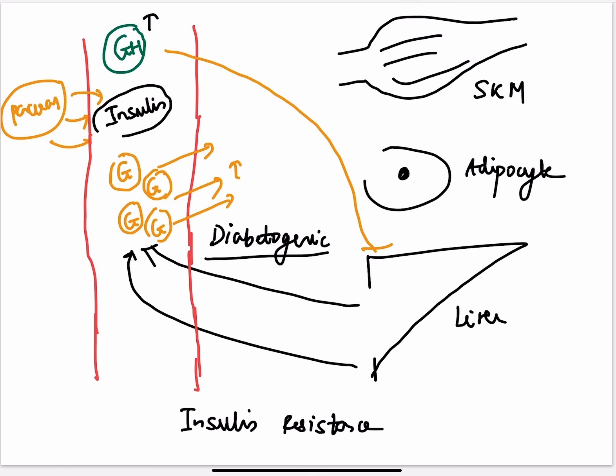All this is called diabetogenic effects of insulin due to growth hormone. It is because of a phenomenon called insulin resistance.